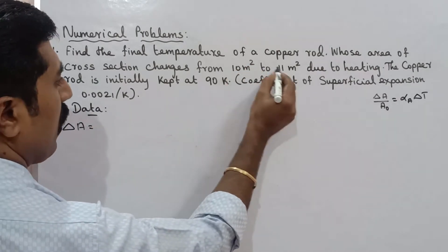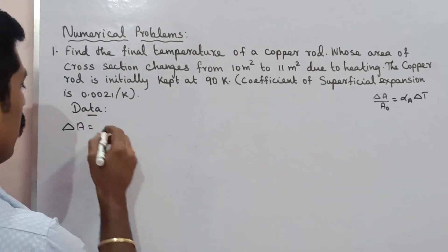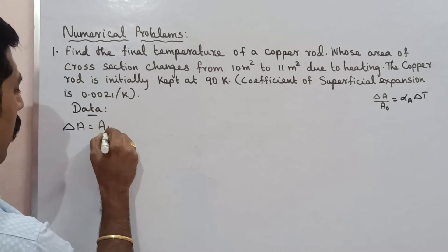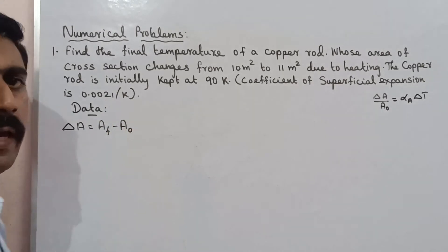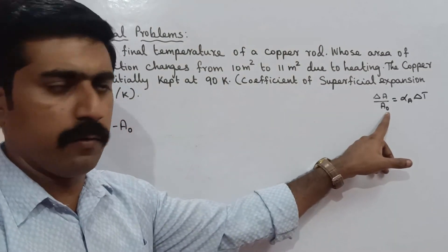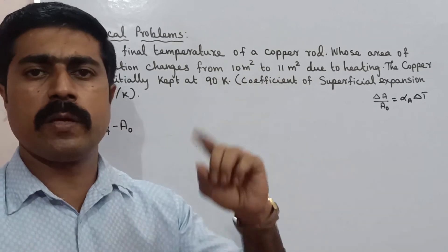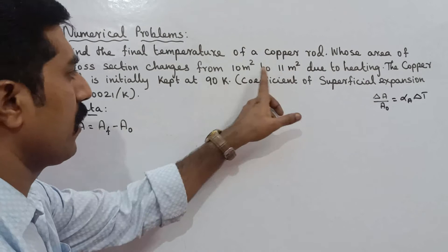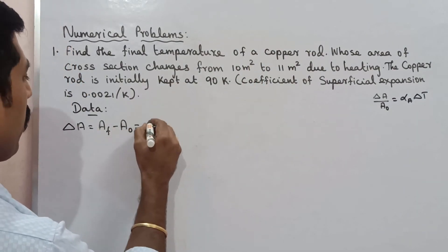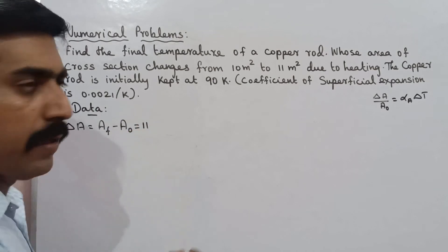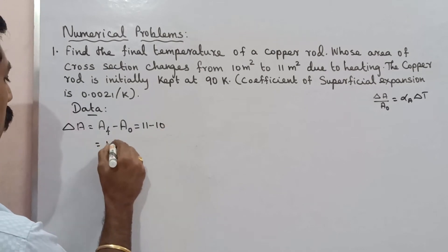This is the initial and this is the final. The initial area is A0. If we change the area: the final area is 11 m² minus the initial area of 10 m², which equals 1 m². So delta-A equals 1 m².